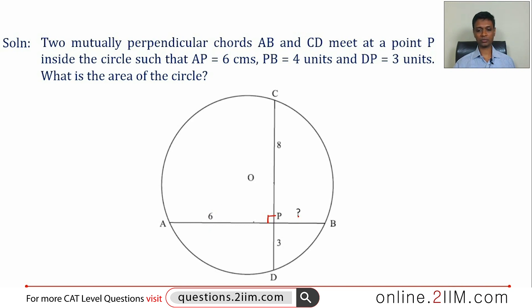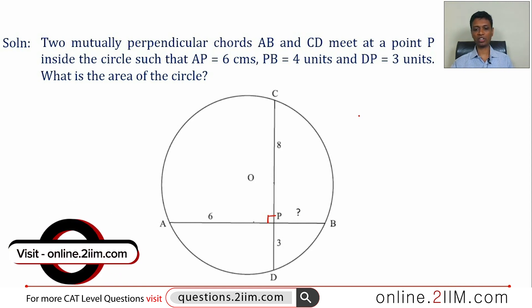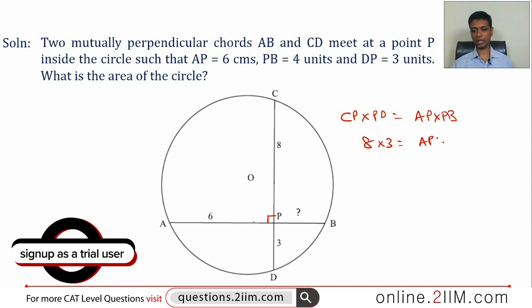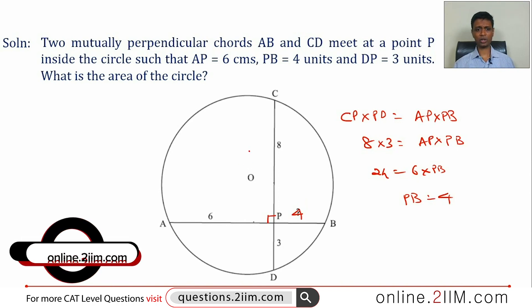The product of the rectangles formed by two intersecting chords is equal, so CP into PD equals AP into PB. 8 into 3 equals AP into PB, or 24 equals 6 into PB. PB is 4, it should be 4 units. Still need to find area of the circle.